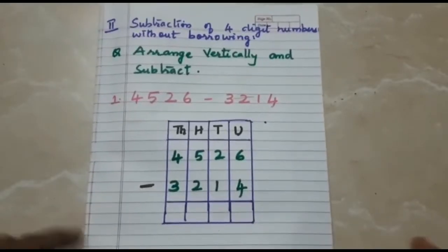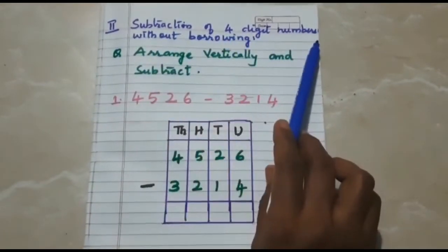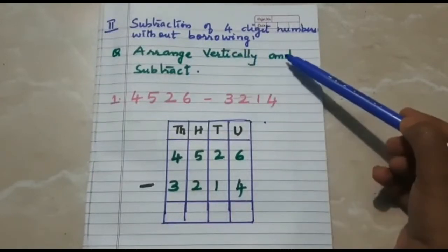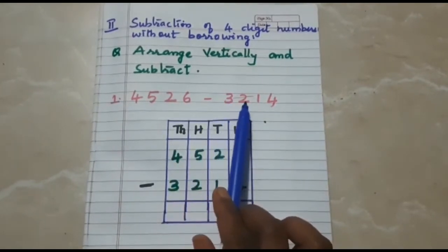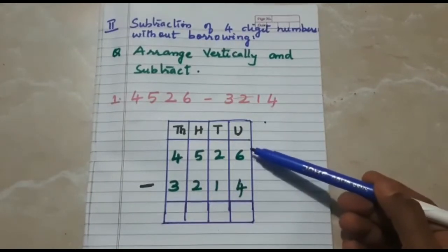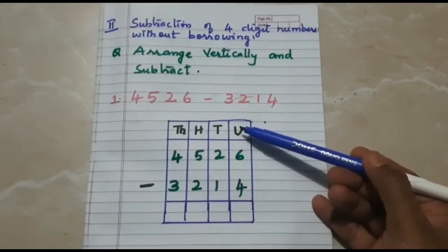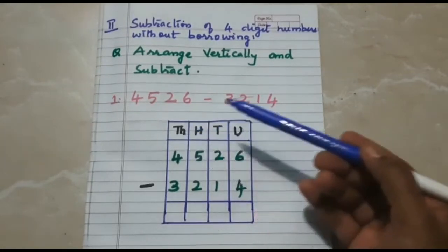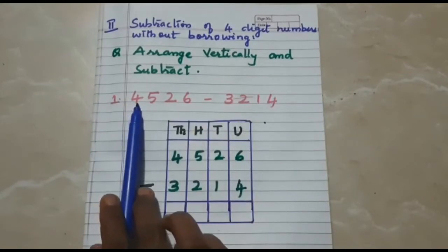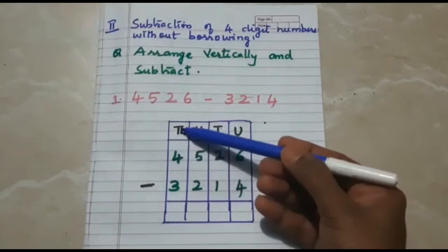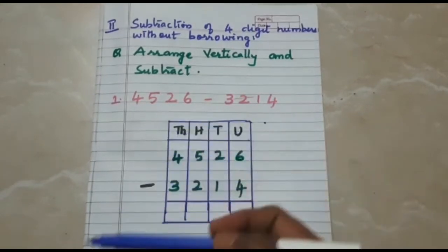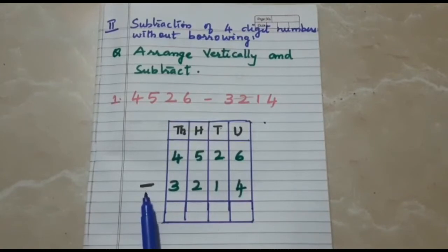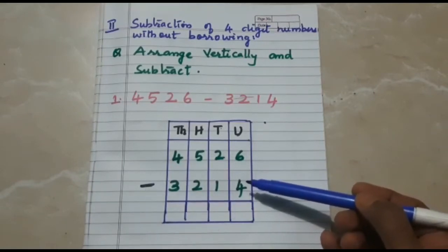Our next subtopic is subtraction of 4-digit numbers without borrowing. The question is: arrange vertically and subtract. I have taken 4526 minus 3214. As usual, draw the columns with pencil and ruler. Write the place value starting from units, tens, hundreds, and thousands. For 4526, write the digits in their correct respective place value, and for 3214 also write the digits in their respective place value. Very important: write the symbol or sign for subtraction.